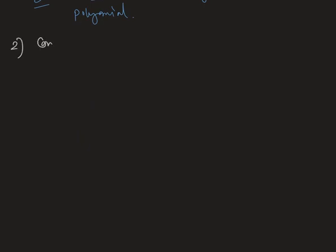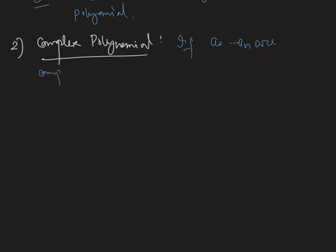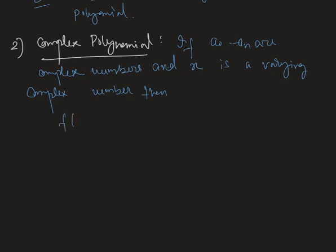That is complex polynomial. If a0, a1, a2, ... , an are complex numbers and x is a varying complex number, then f(x) = a0 + a1·x + ... + an·x^n is called a complex polynomial.